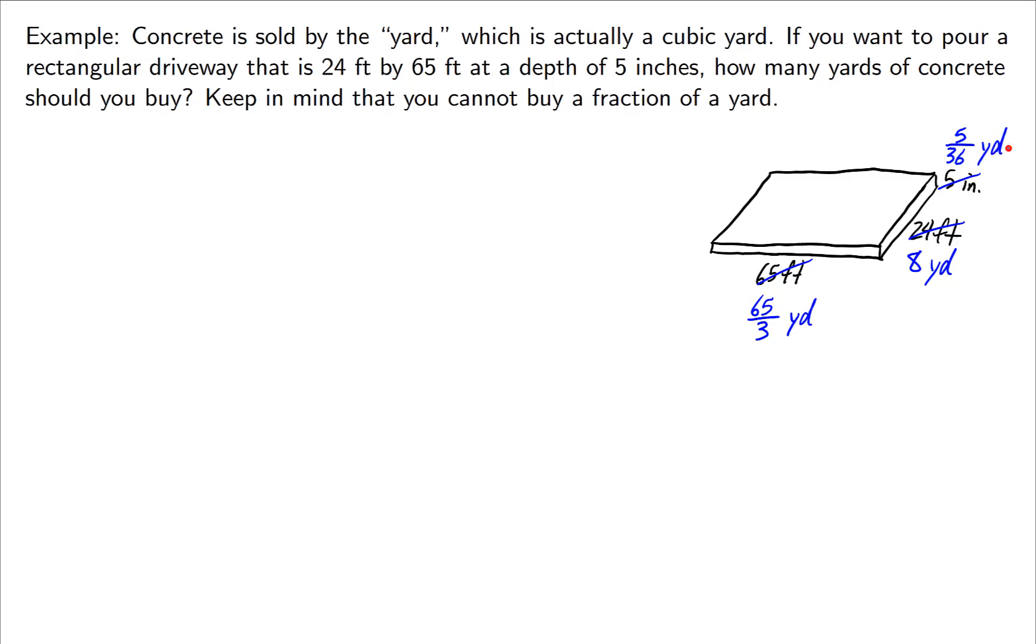And now all of our measurements are in the same units, and it's in yards, which is what we're trying to get in the first place. So now if we want to simply figure out how much concrete to buy, we will find the volume of this extremely thin rectangular solid. Again, it's length times width times height. The length is 65 over 3. Just work with the fraction as needed. Width is 8. Height is 5 over 36.